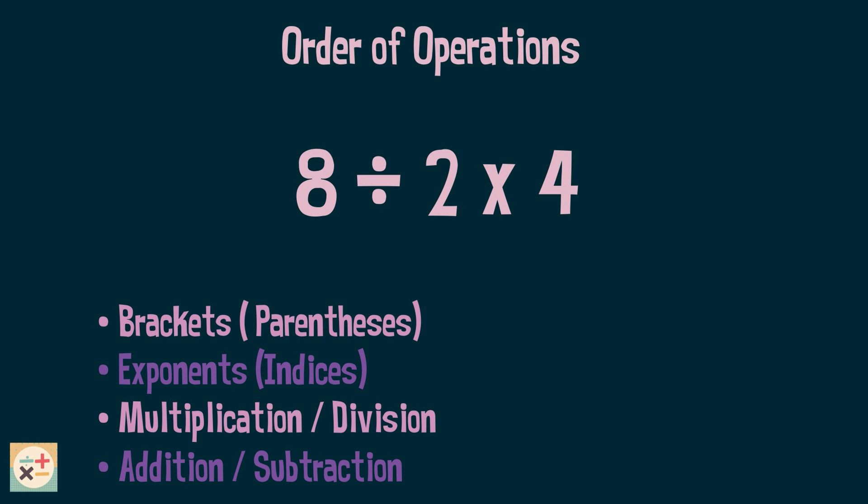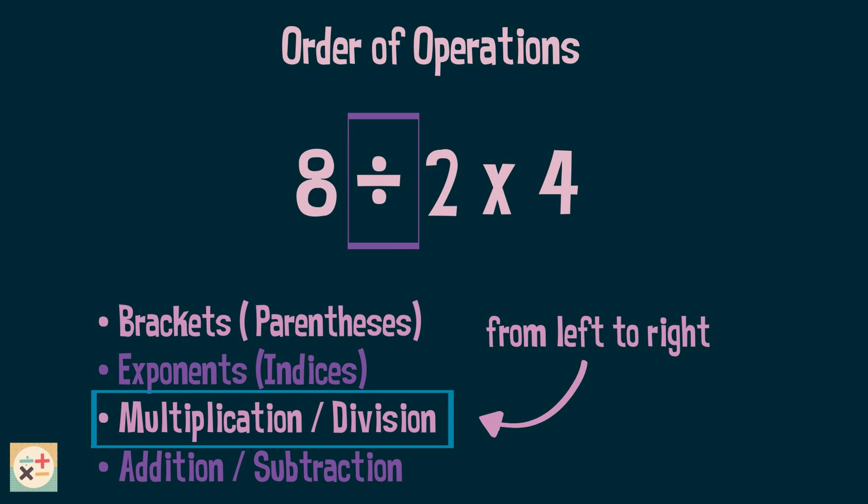Next up in the order of operations we have exponents. There aren't any here, so we can move on to the next step, multiplication and division. Now this is the point where misconceptions can occur. For this step, multiplication and division should be dealt with in the order they appear in the expression, i.e. from left to right. In this expression, division occurs before multiplication, so we should focus on the division aspect first.